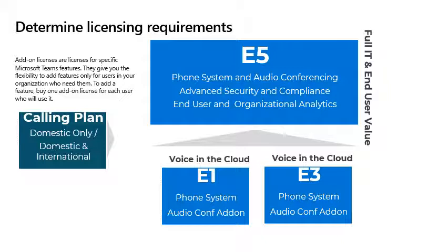As you can see on the screen, we have an E5 entitlement, which provides full IT and end-user value. E5 does include phone system and audio conferencing, and it also has advanced security and compliance features, end-user and organizational analytics. We also have additional offerings like E1 or E3, in which phone system and audio conferencing will be considered as add-on features.